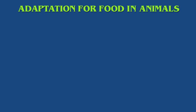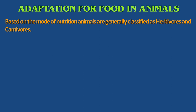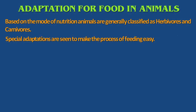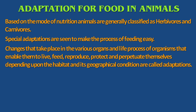Now we will see how adaptation takes place for ingestion of food in animals based on the mode of nutrition. Nutrition is the intake of nutrients. Based on the mode of nutrition, animals are generally classified as herbivores and carnivores. Herbivores are those animals which depend upon plants, whereas carnivores are those animals which depend upon other animals for food.